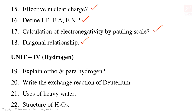Unit 4: Hydrogen. Important 2 mark and 3 mark questions include ortho and para hydrogen (very important), exchange reactions of deuterium (very important), uses of heavy water, and structure of H2O2. These are the 4th unit important golden questions.